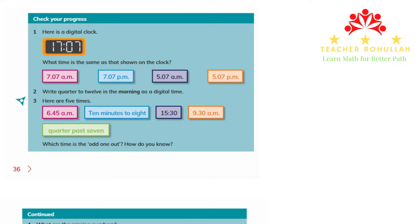Let's start working on the questions. In question one, it says: here is a digital clock showing 17:07, or we can say 5:07 in the afternoon. It is asking: what time is the same as that shown on the clock? The times given are 7:07 a.m., 7:07 p.m., 5:07 a.m., and 5:07 p.m.